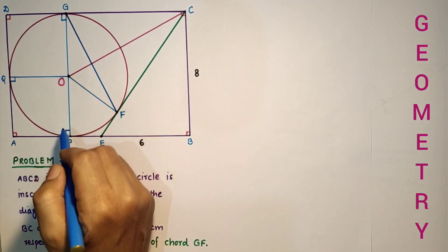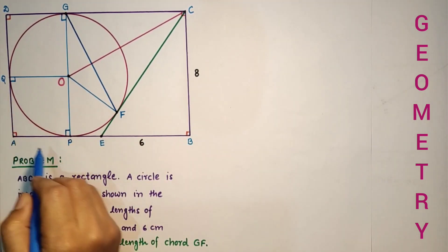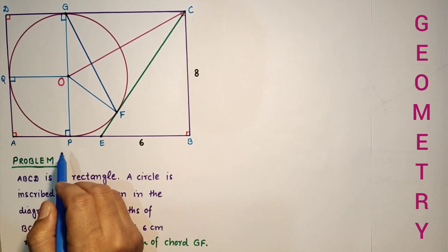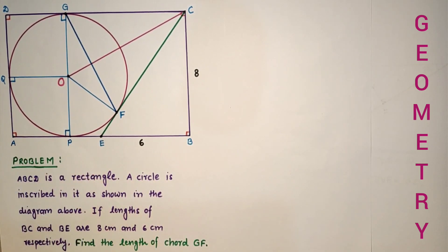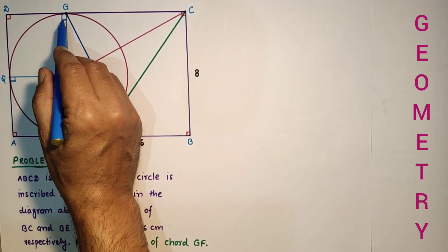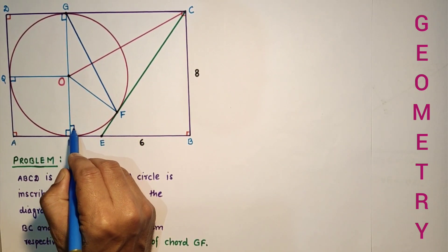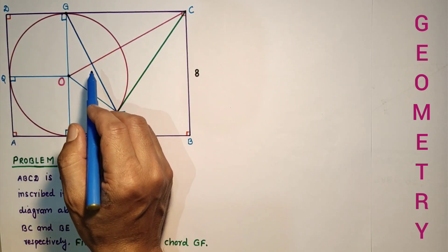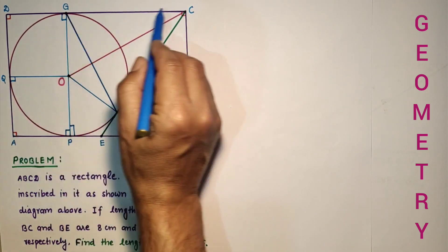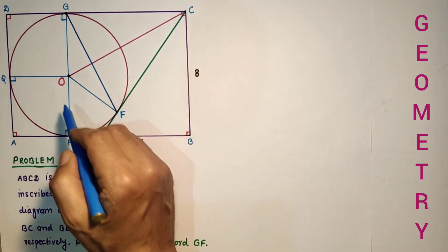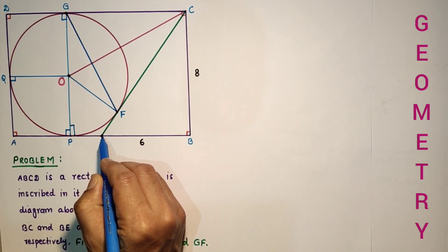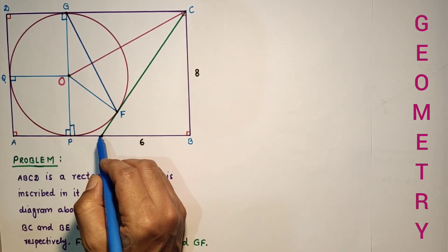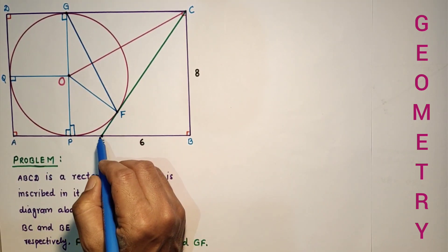We have joined OP and OQ, where P and Q are points of contact with the sides of the rectangle. Since radius and tangent are perpendicular, this is 90°, this is 90°, forming right angle triangles.